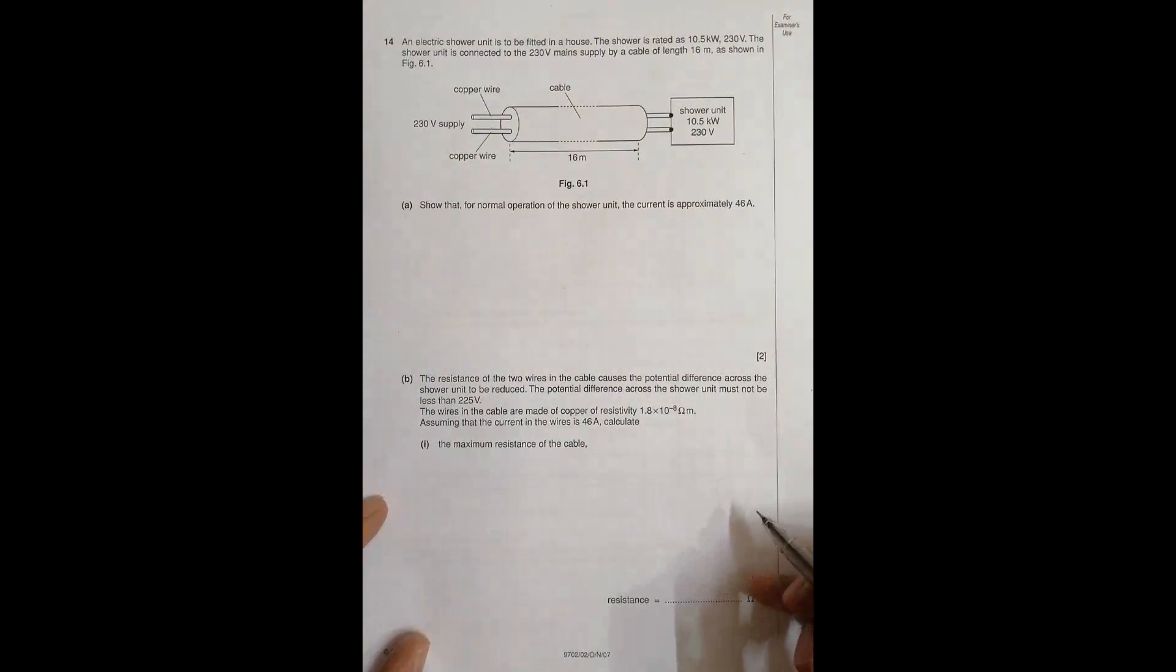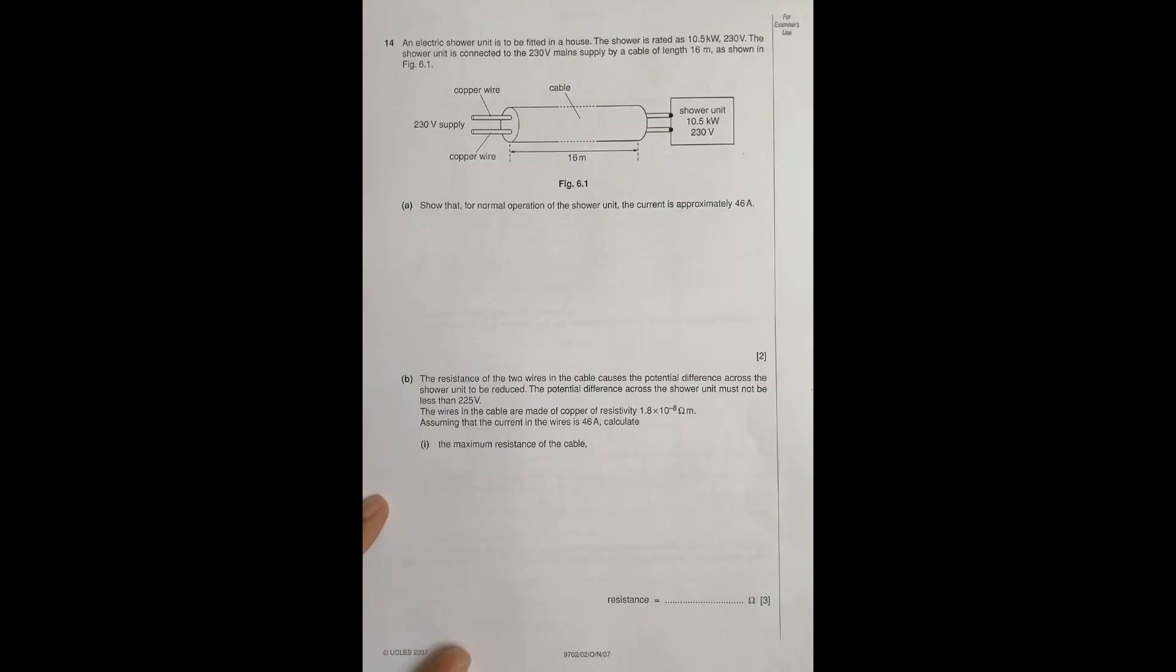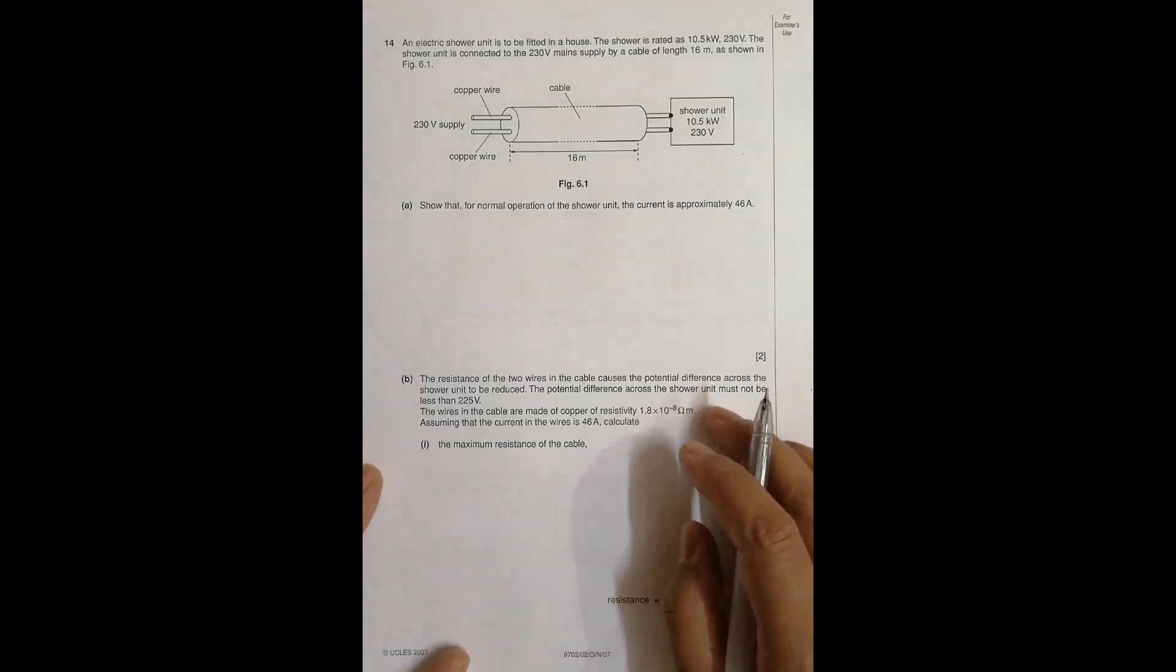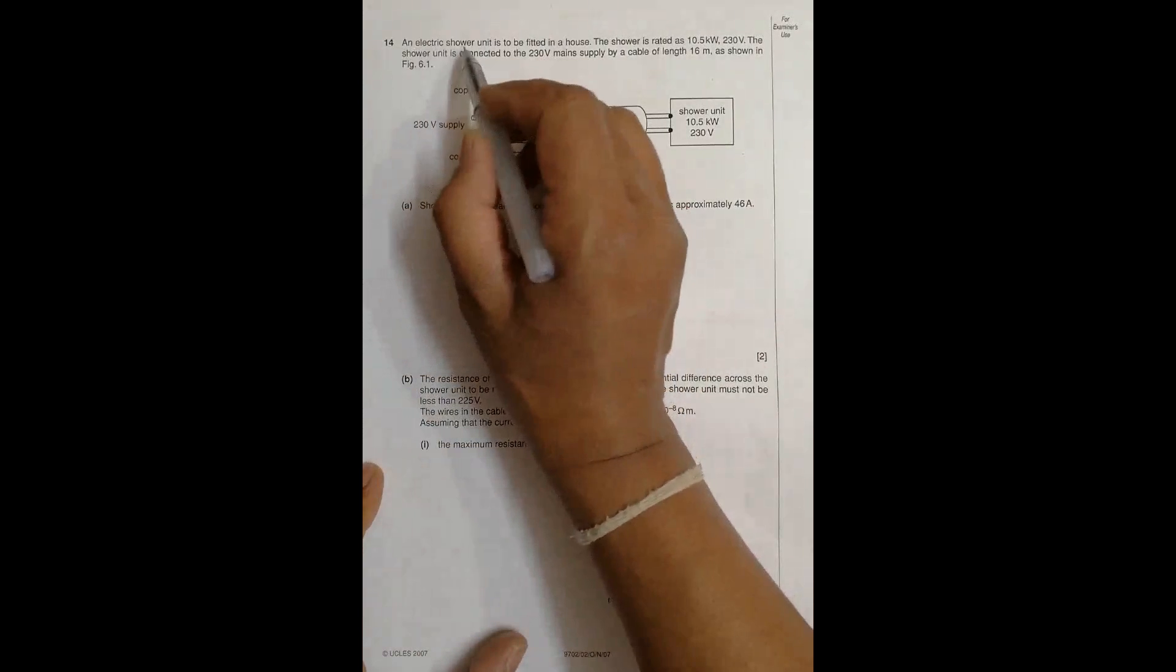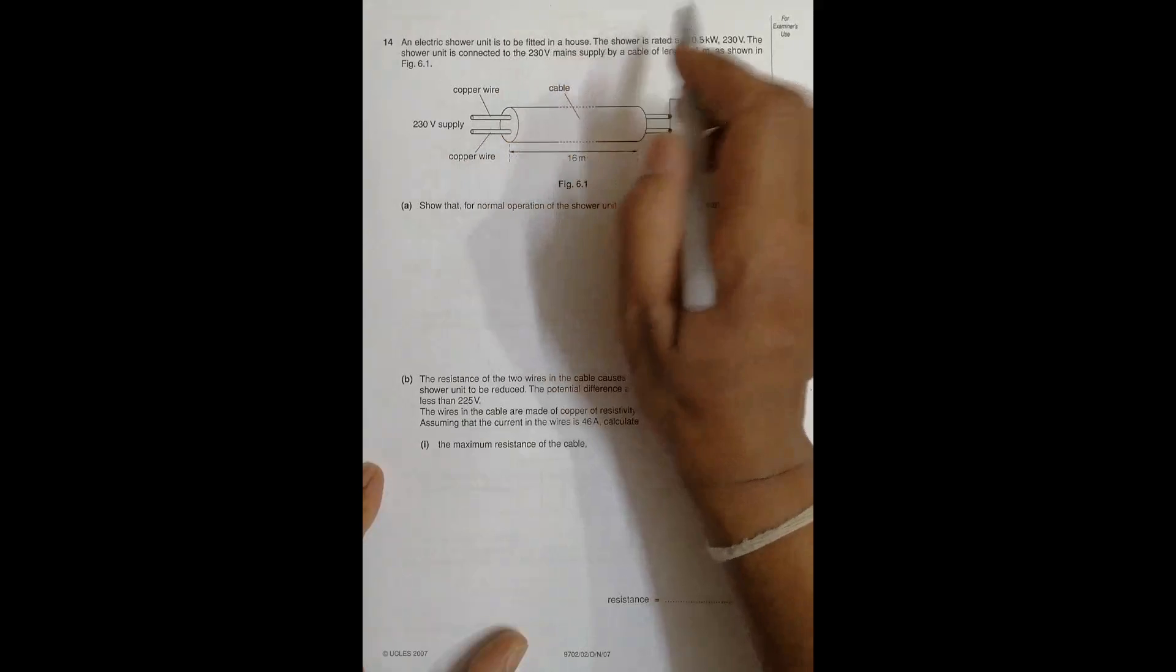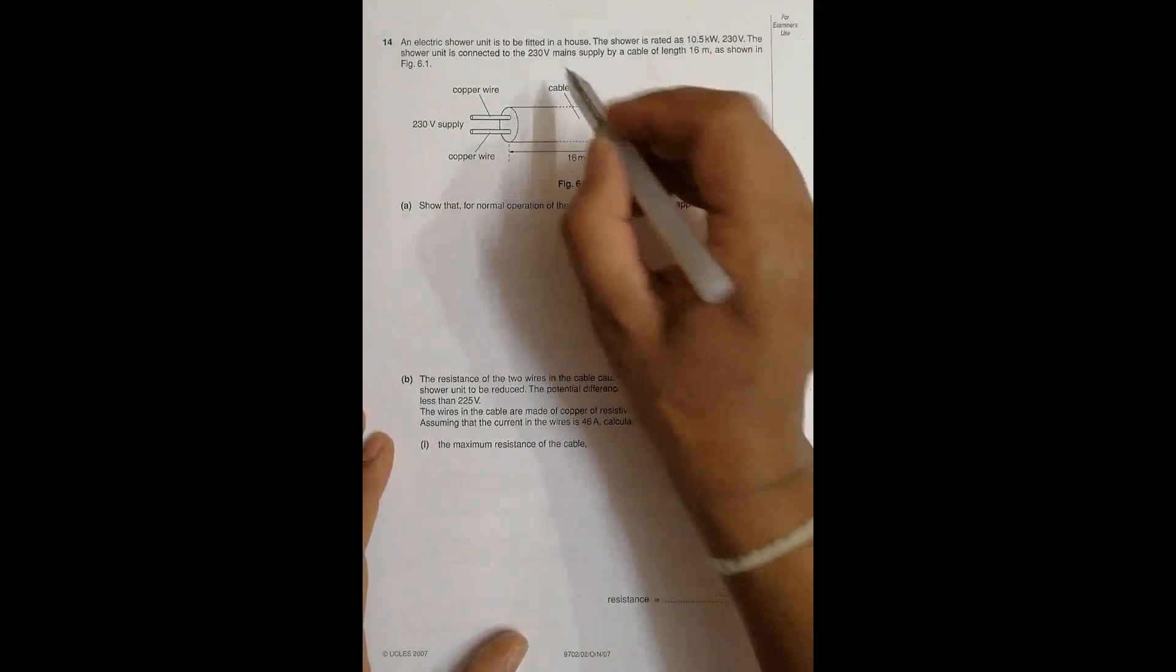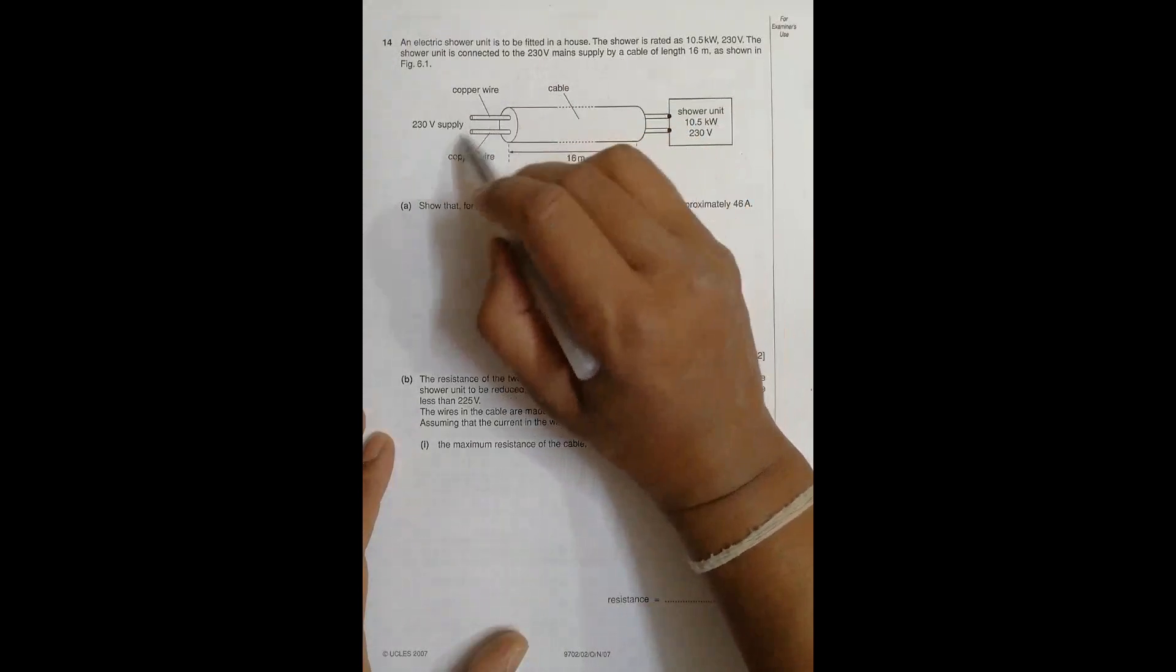Hello folks, today's question is 2007 October November paper 2, question number 14. The problem is concerned with current and electricity. It says that an electric shower unit is to be fitted in a house. The shower is rated as 10.5 kilowatt, 230 volt is the power rating.